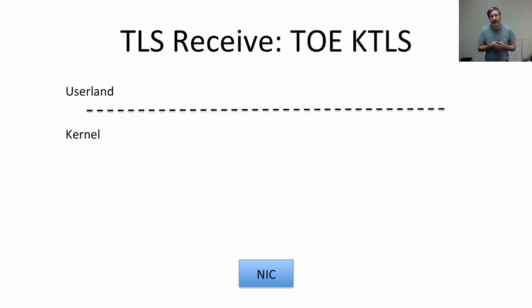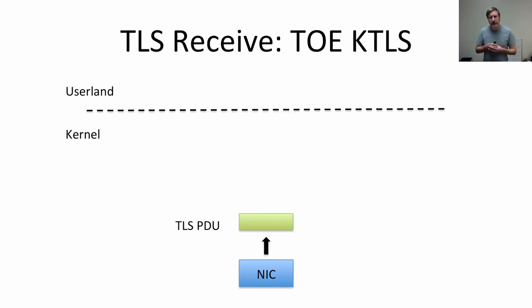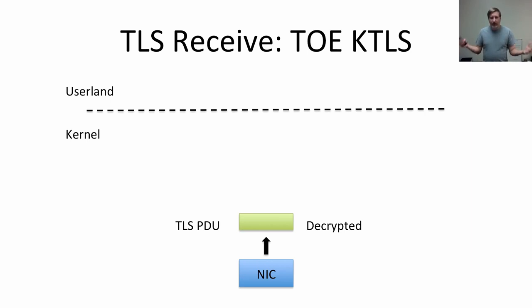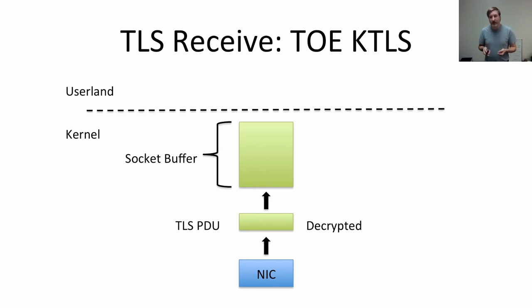The first receive model implemented is KTLS with a TOE engine that is TLS-aware. When the NIC receives data, it decrypts the TLS frame and strips framing internally, providing already-decrypted messages to the driver. The driver checks for errors such as authentication mismatches, and if the TLS frame was received correctly, prepends a control message with the TLS header and queues it into the socket buffer. The socket buffer then holds only already-decrypted data, which userland retrieves via recvmsg.